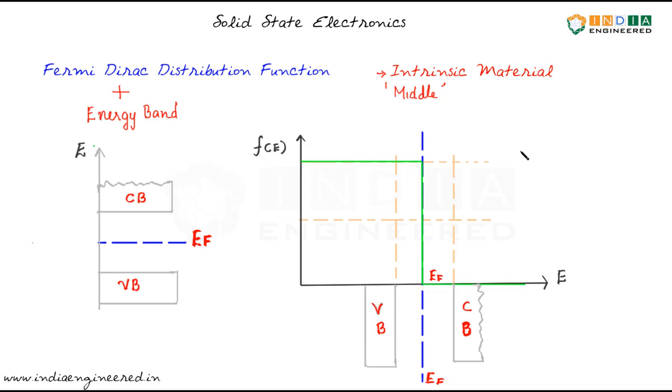Now, we can see at 0 Kelvin, the distribution function follows our analysis. That is, the conduction band is empty. There is no probability of finding an electron here because here it is 0 and here we have a completely filled valence band. This is at 0 Kelvin.